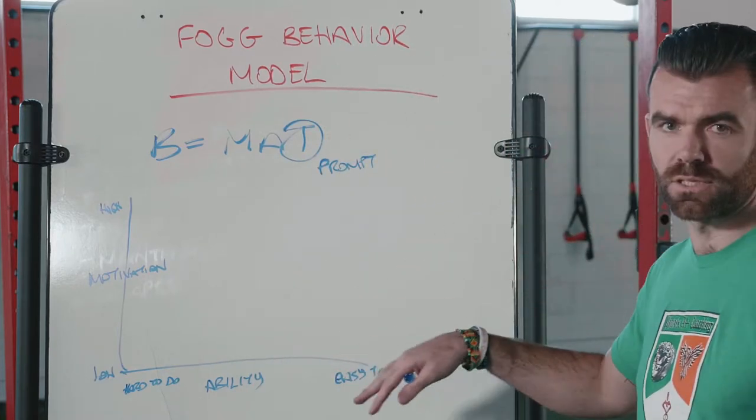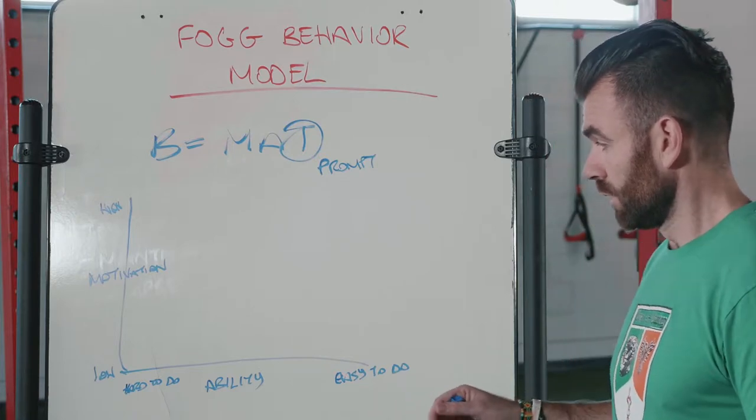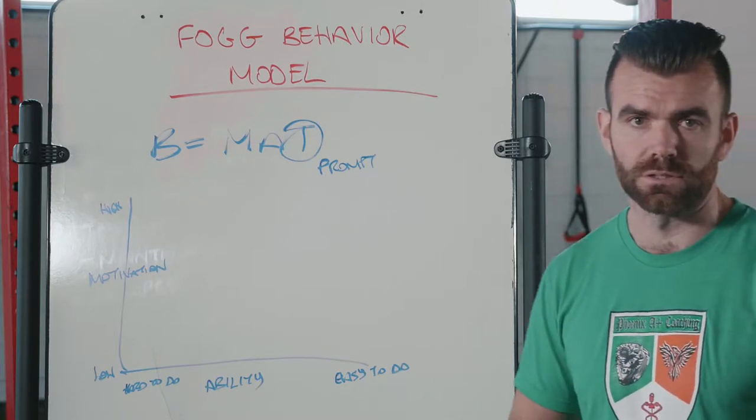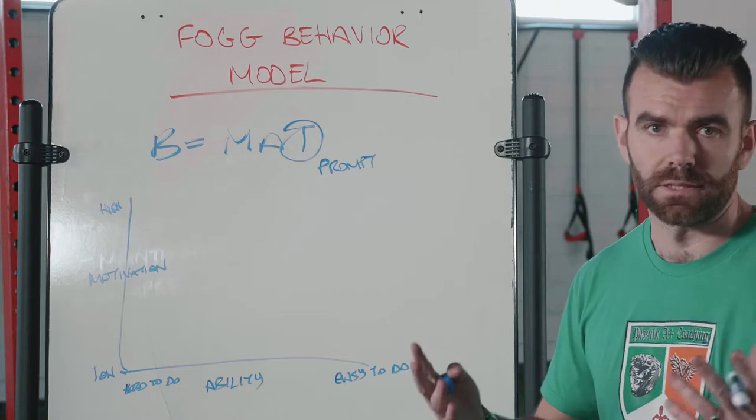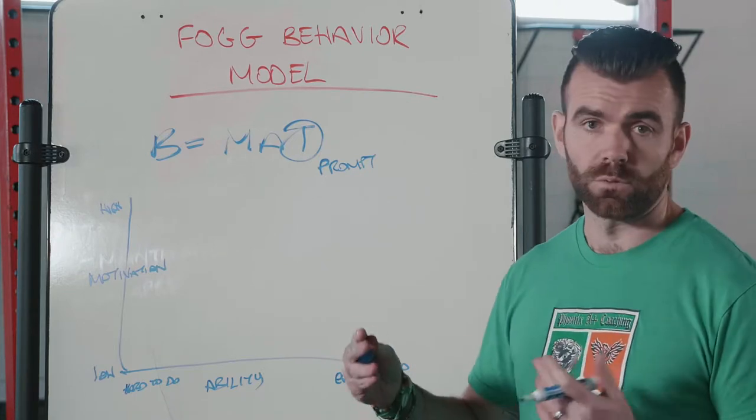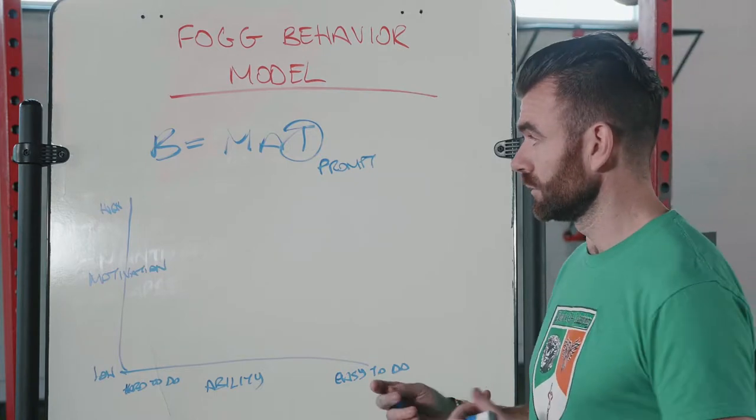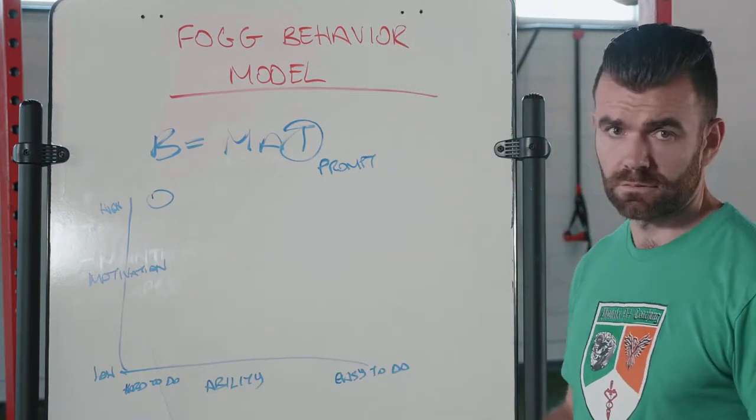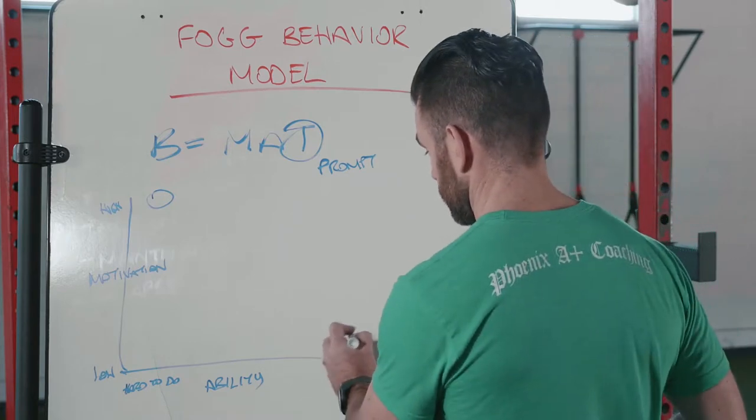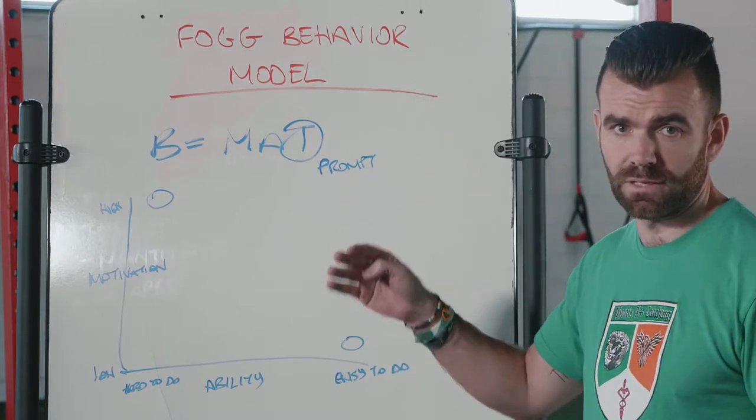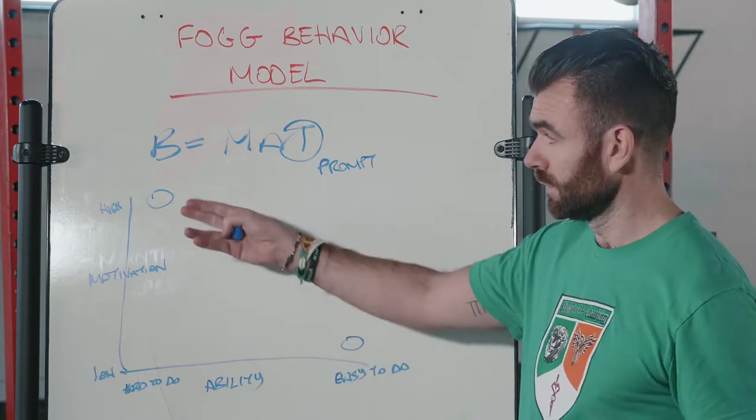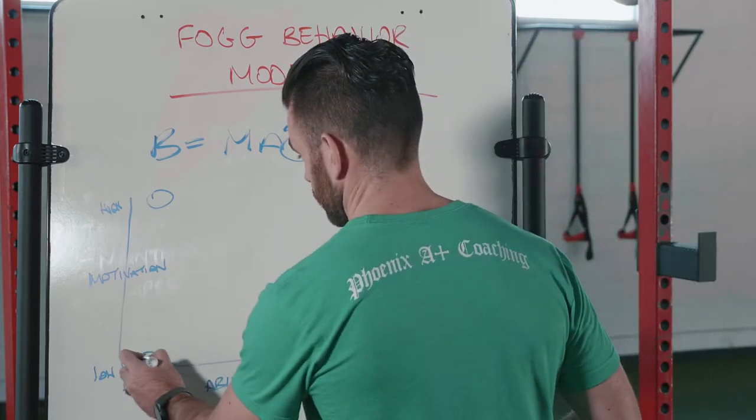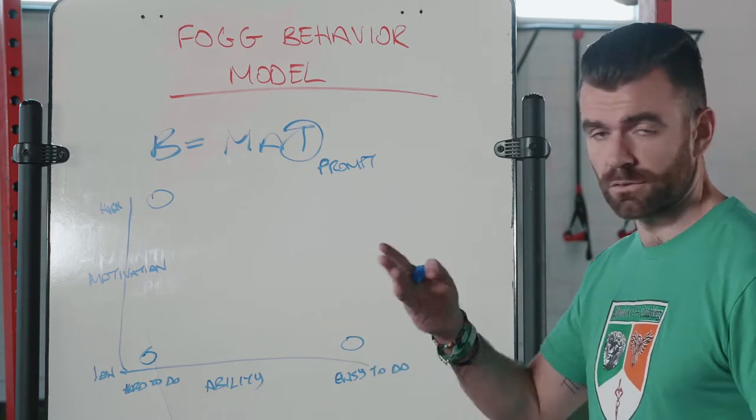And don't worry about the graphics, we'll explain that later. Say, for example, something as simple as making a donation to an animal shelter. Some people will be highly motivated to do it. If you're highly motivated and you're only donating ten dollars, it's easy to do, you're highly motivated, then the behavior is going to happen. But if you're highly motivated but somebody wants you to donate ten thousand dollars, then you're going to fall in here.